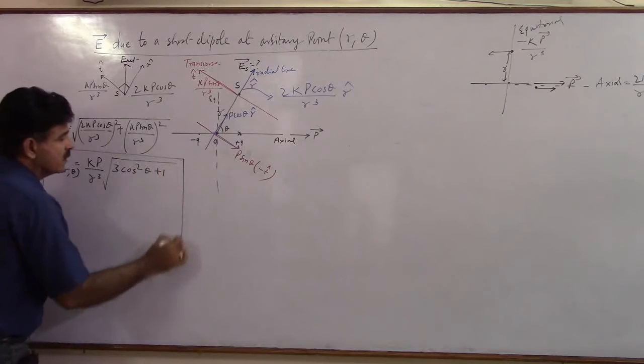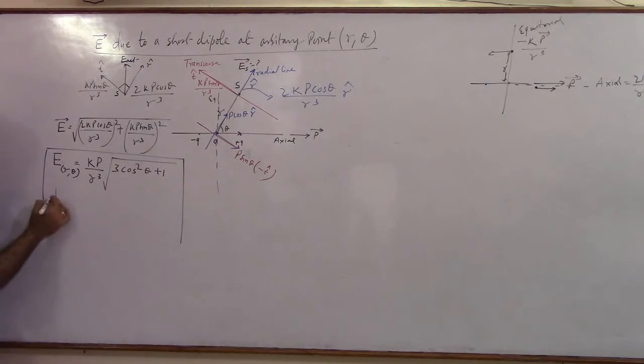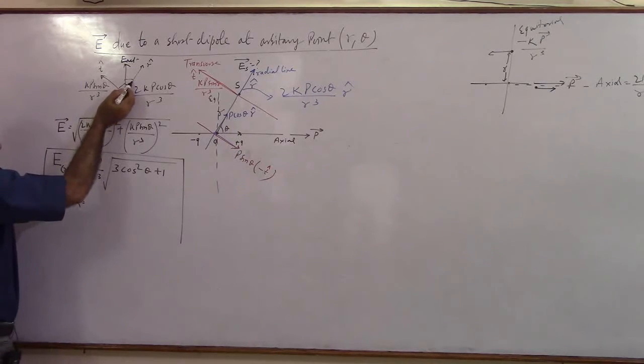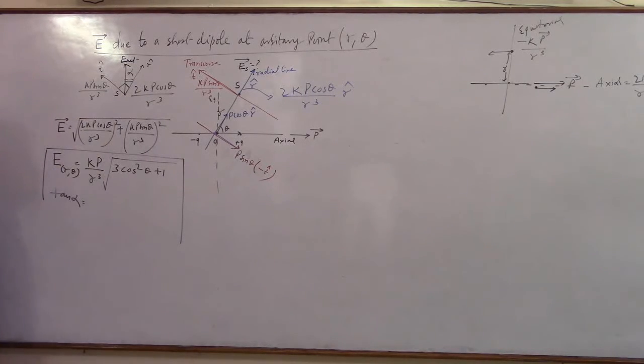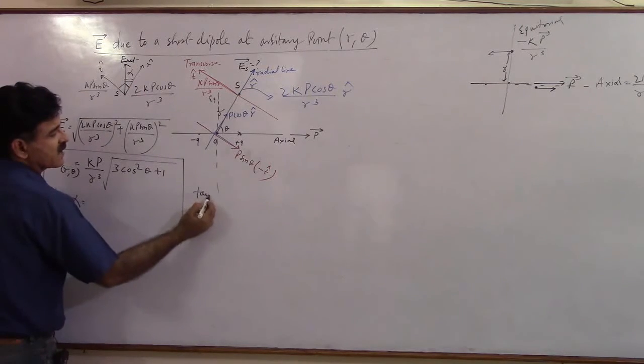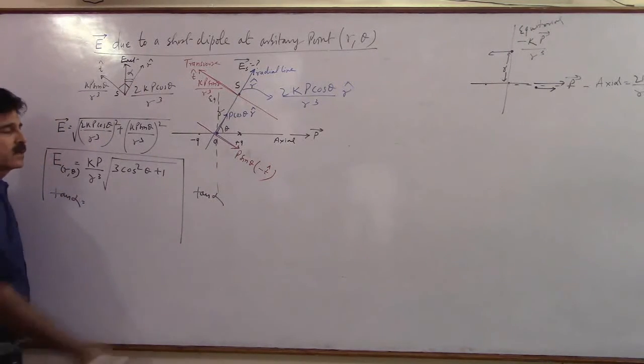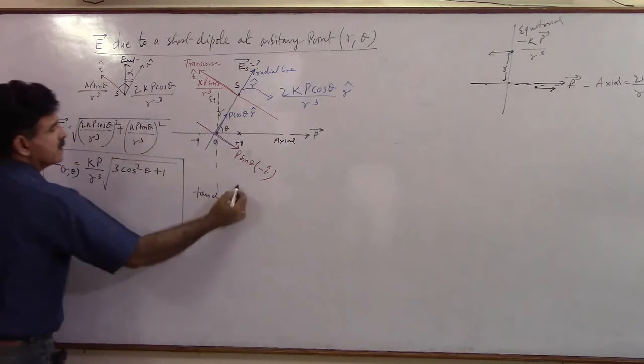So your result will be 3 cos square theta plus 1. This gives you the magnitude part. What will be the direction? Tan alpha, take alpha with this. This is your alpha. So what is the rule we use? Tan alpha with radial, so what is it? Transverse upon radial.